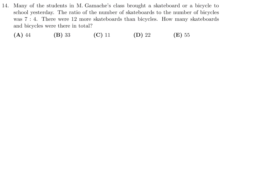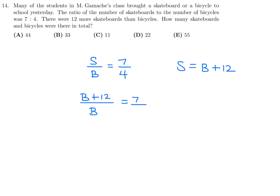Many students in M. Gamache's class brought a skateboard or bicycle to school. The ratio of skateboards to bicycles was 7 to 4, and there were 12 more skateboards than bicycles. How many skateboards and bicycles were there in total? So S over B equals 7 over 4, and S equals B plus 12. Substituting: (B plus 12) over B equals 7 over 4. Cross-multiplying gives 4B plus 48 equals 7B.